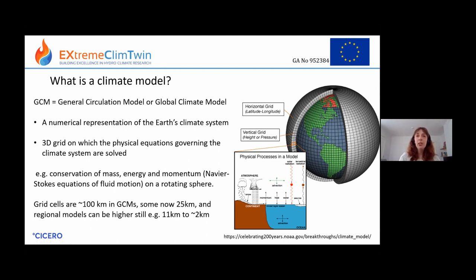There are also lots of other processes, like radiation and how it interacts with aerosols or greenhouse gases, and the exchanges of momentum, heat, and water between the atmosphere and the ocean, and then precipitation and so on. The grid cells are generally 100 kilometres in global models.